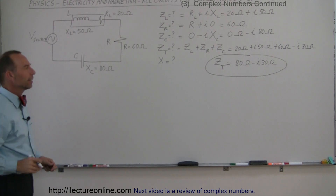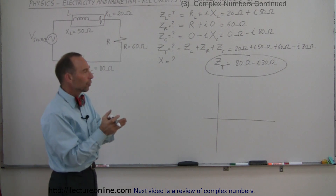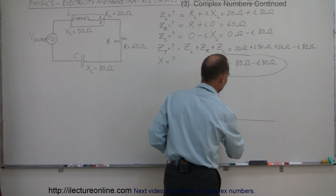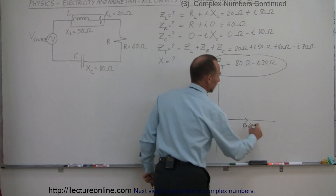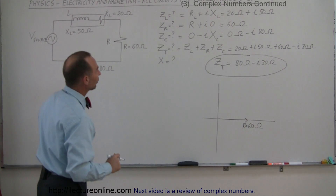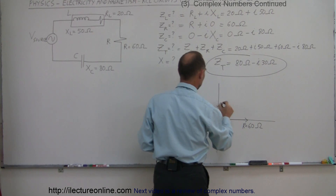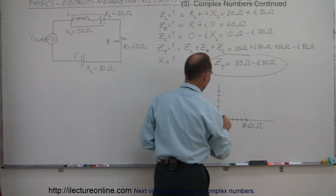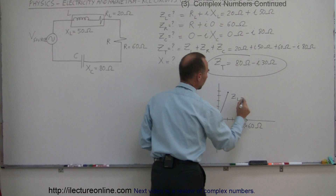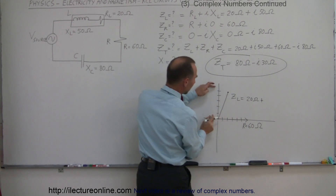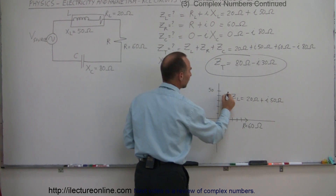Now let's draw a phasor-type diagram to make this clearer, indicating the opposition to the current and how it occurs in phase over time. For the resistor, the opposition occurs at the same time as the voltage source, so we have plus 60 ohms for the resistance. For the inductor, we have a real part of plus 20 and an imaginary part of plus 50. So the impedance of the inductor is represented as 20 ohms real plus i times 50 ohms imaginary.